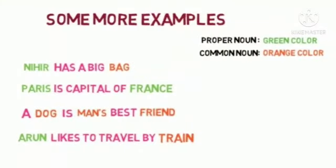Here are some sentence examples. Proper nouns are written in green and common nouns in orange. 'Nihir has a big bag' — Nihir is a proper noun and bag is a common noun. 'Paris is the capital of France' — Paris and France are both proper nouns. 'A dog is man's best friend' — dog, man, and friend are all common nouns.